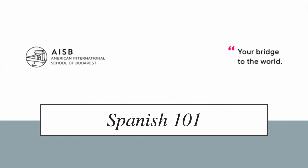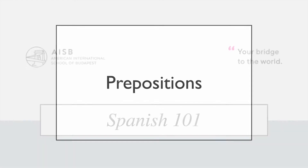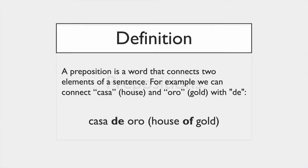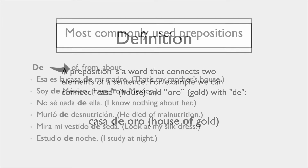Spanish 101. This video is about prepositions, which is a word that connects two elements in a sentence. For example, we could connect 'casa' and 'oro', and this is what we would get: 'casa de oro' — house of gold.